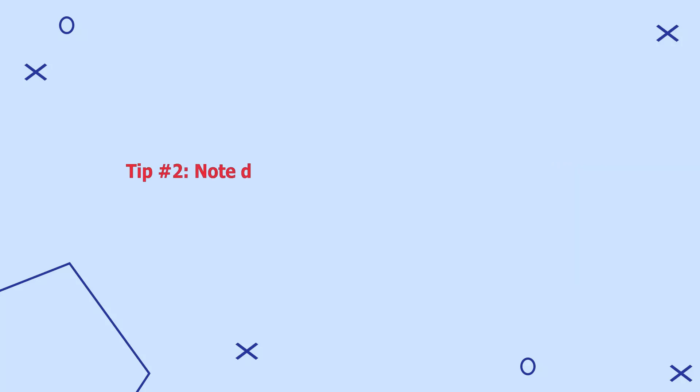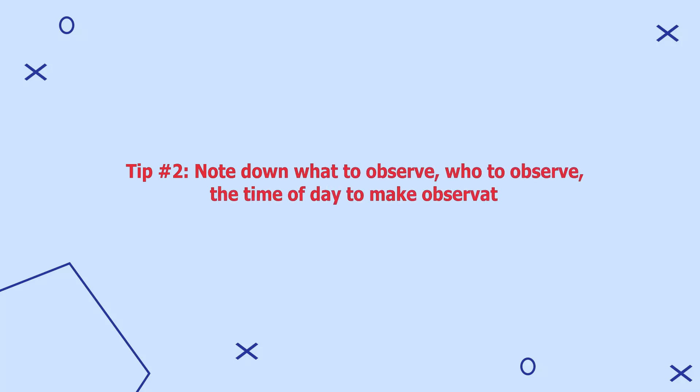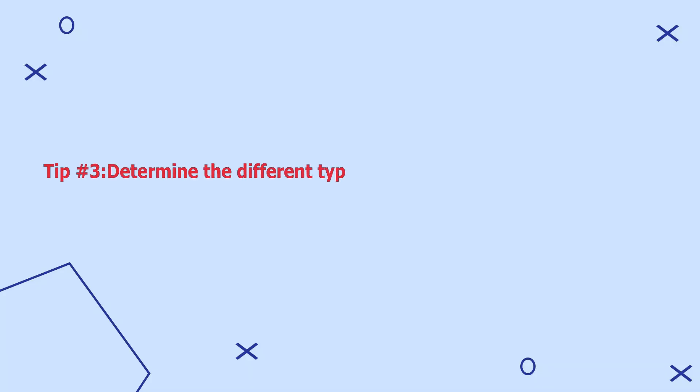Tip number two: after gaining access to the site, the observer should note down what to observe, who to observe, the time of day to make observations, and the length of observations. In some instances, an observer can rely on a gatekeeper to assist them in accessing the observation group. Tip number three: determine the different types of observations that will be taken — for example, an observer being a complete participant on one side of the continuum or a complete observer on the other.